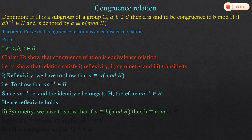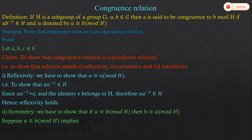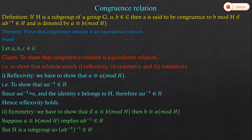The second condition is symmetry. In symmetry, we have to show that if a ≡ b (mod H), then b ≡ a (mod H). So suppose that a ≡ b (mod H), which means a into b inverse belongs to H. But H is a subgroup of G, so every element of the subgroup possesses its inverse.